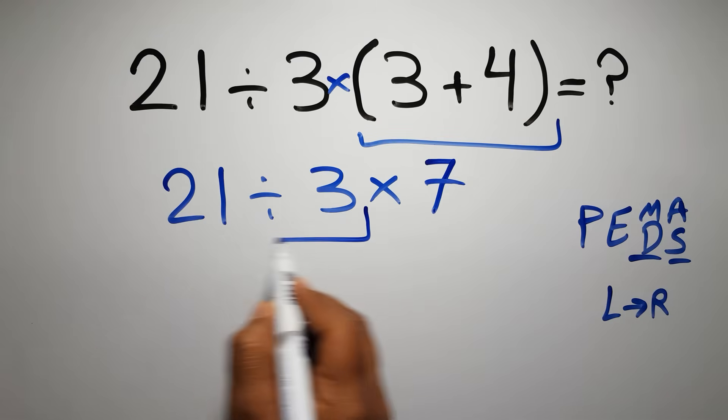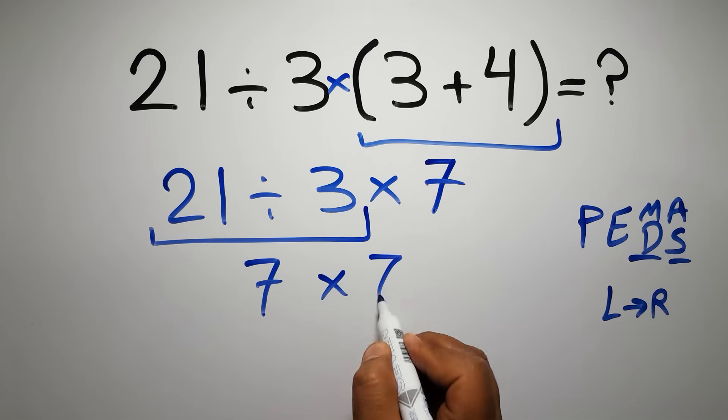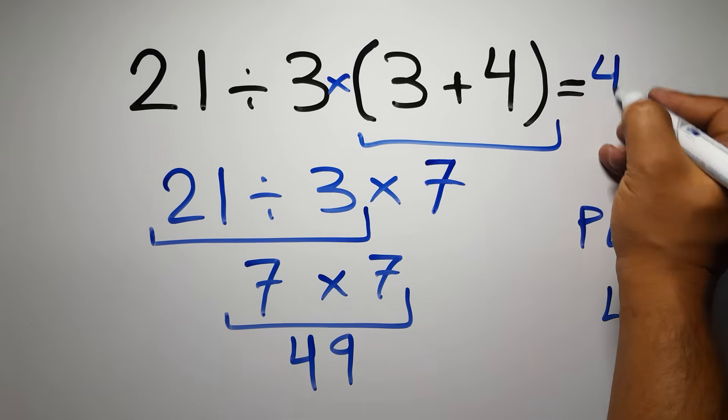21 divided by 3 is just 7. So, 7 times 7 gives us 49. And this is our final answer to this problem. The correct answer is 49.